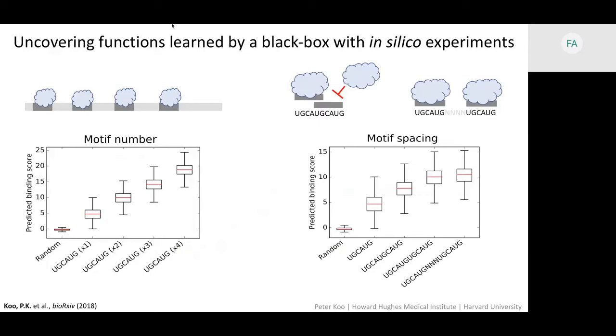So I developed a method to directly test hypotheses that we formulate from saliency analysis. And we can do this with in silico experiments. The basic idea is that we can embed hypothesized patterns into null model sequences and send them through the neural network and get out the predictions. What this provides you with is the importance of that specific feature